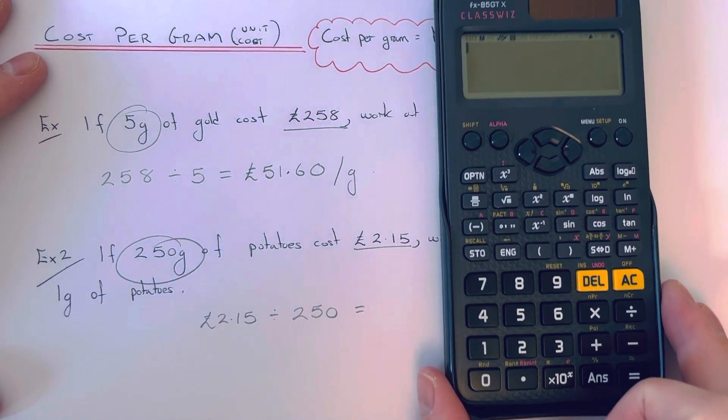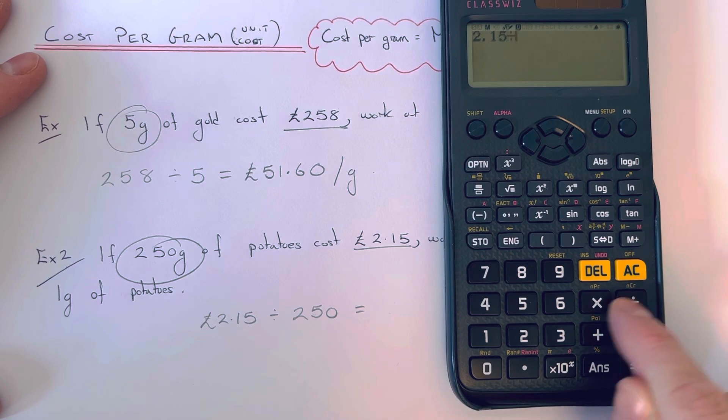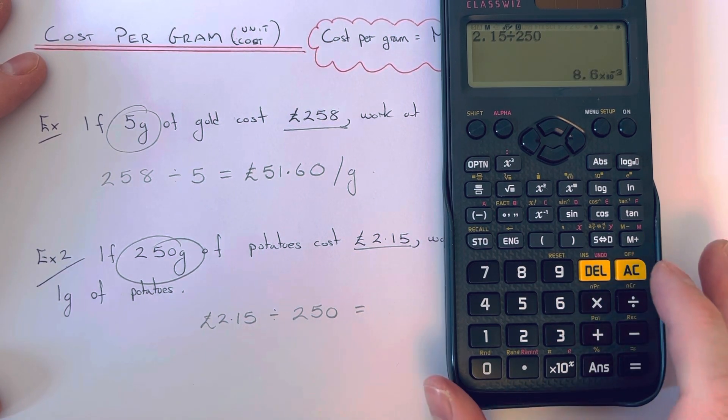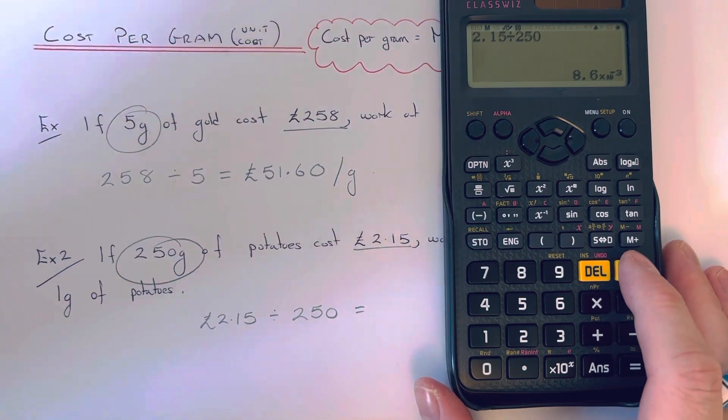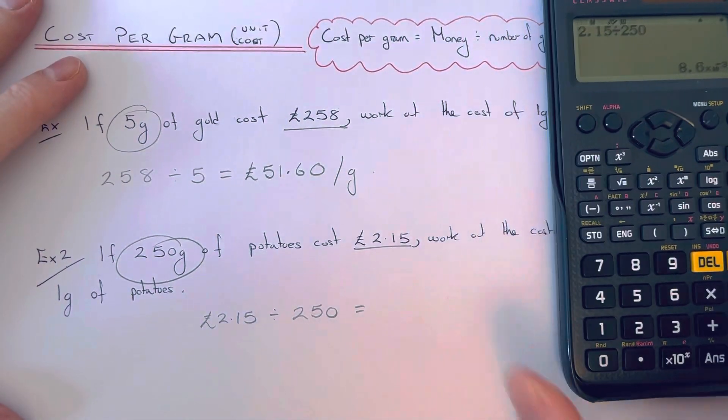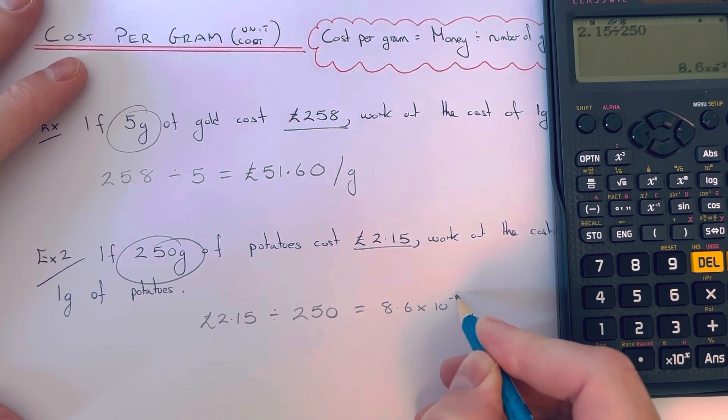Again, if you get your calculator, we do £2.15 divided by 250. It's going to come out in standard form—that would be 8.6 × 10⁻³.